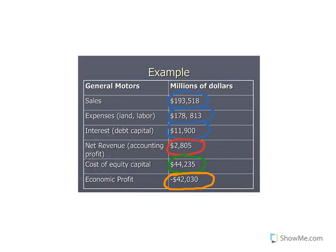What did shareholders start to do? They started to leave — to pull their money out and invest elsewhere because General Motors was not meeting their opportunity cost. If I had invested expecting a 5% return and they're giving me a quarter-point return, why would I keep my money there when I can invest in another company that will give me a 5% return?